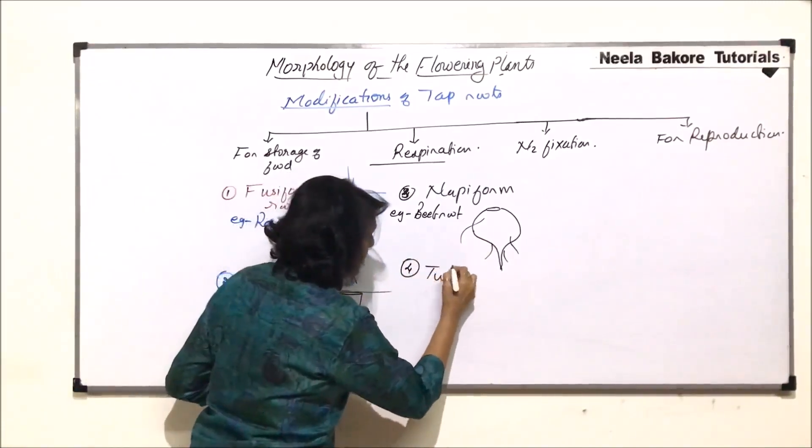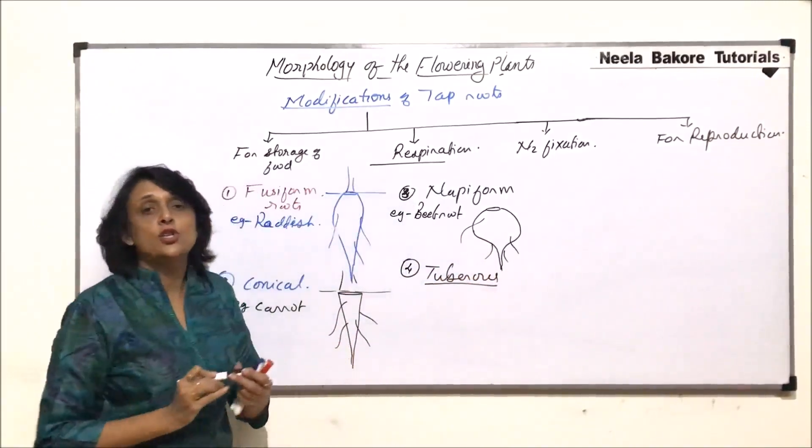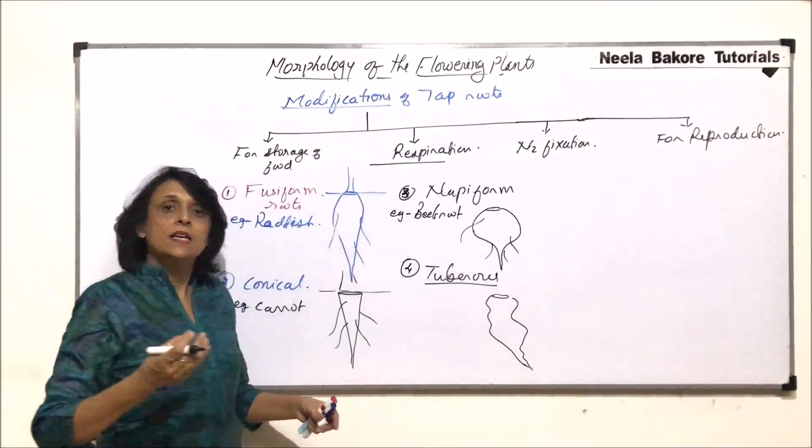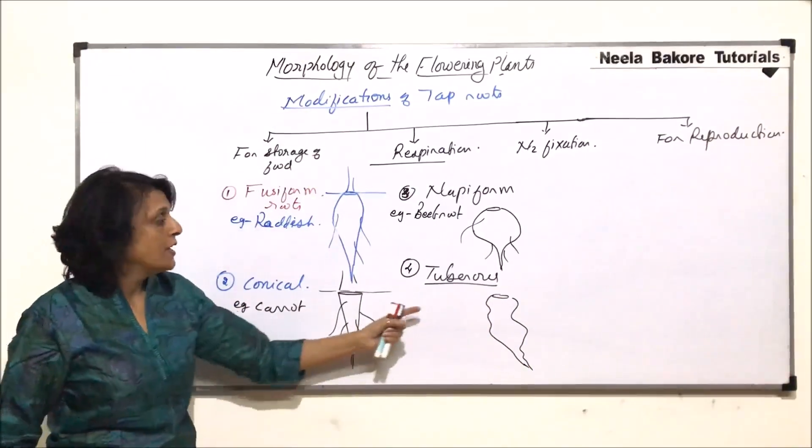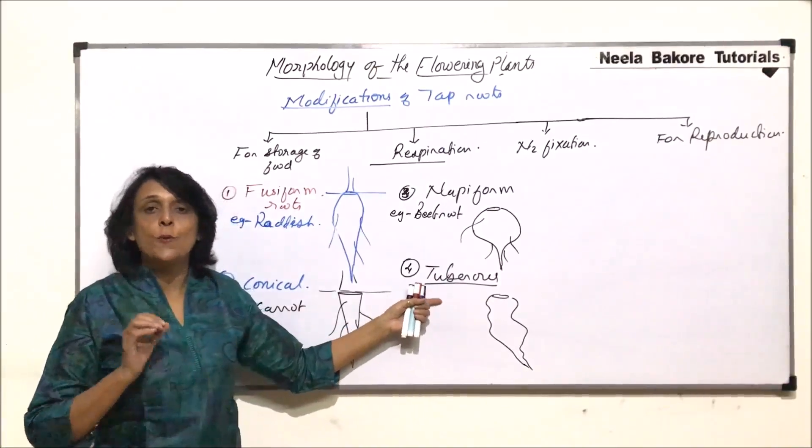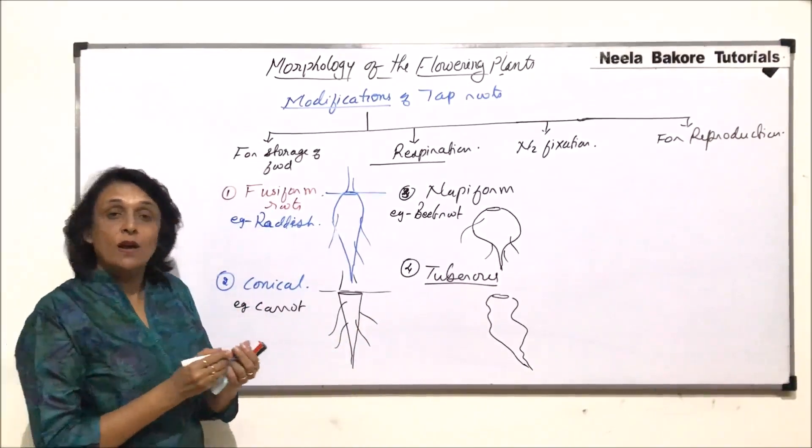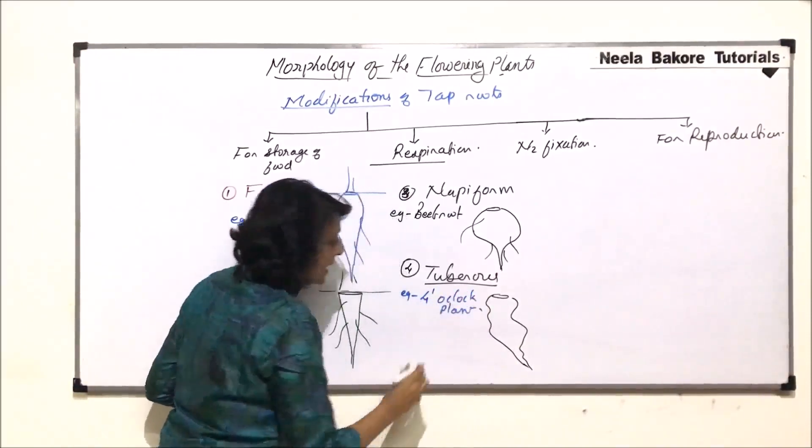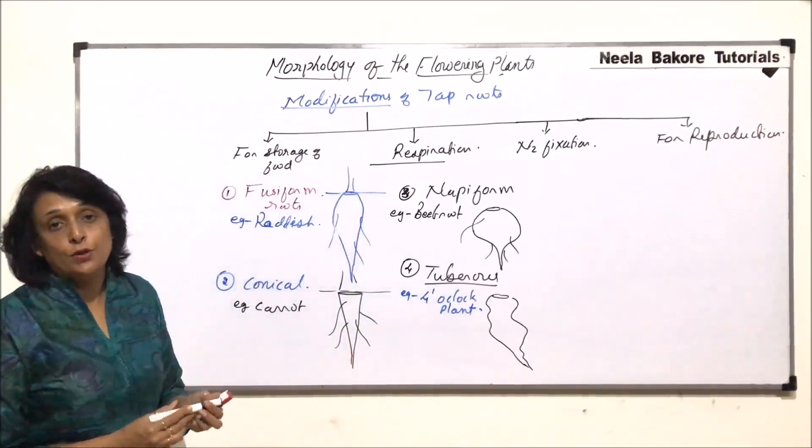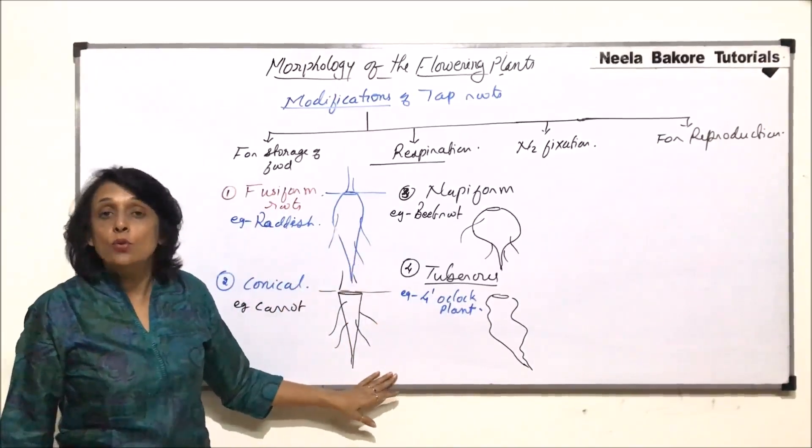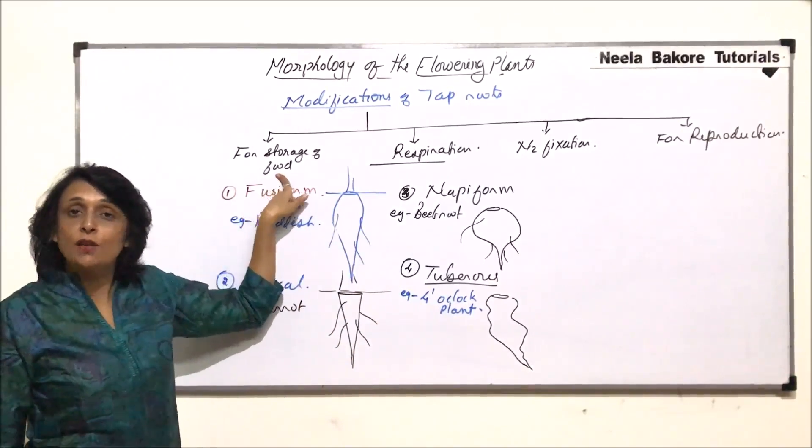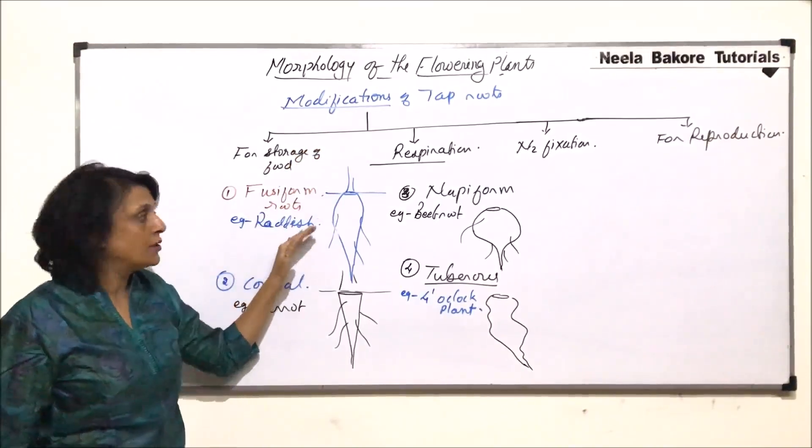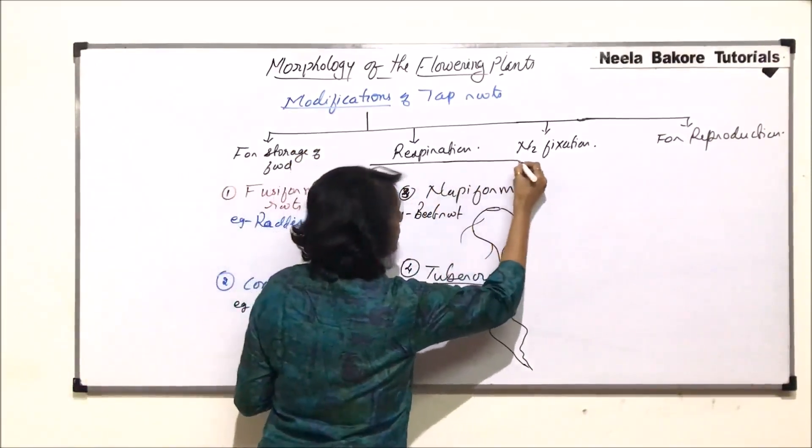The next one is known as tuberous. Tuberous means the shape is irregular. So this is the base and the root is something like this. There is no pattern. Somewhere it is narrower. Somewhere it is swollen. These are tuberous roots where the shape is not decided or shape is not fixed. The example that we would take here is of four o'clock plant. This is the common example of tuberous root. In all these four categories, the roots are swollen because they have to perform the additional function of storage. So tap roots are modified for performing the function of storage. These are four modified roots for storage.